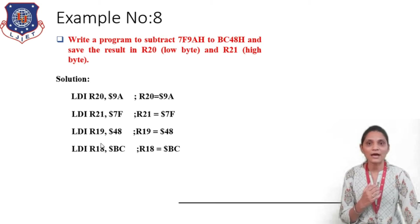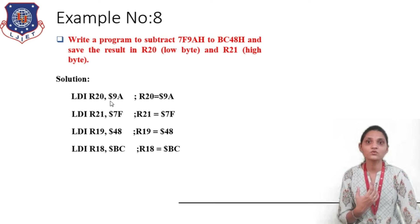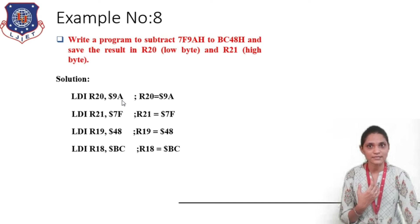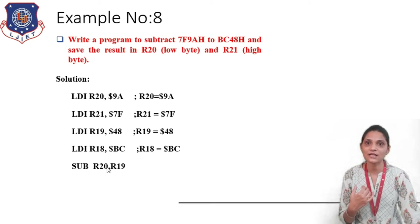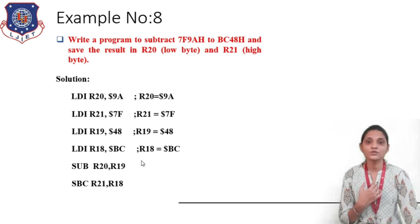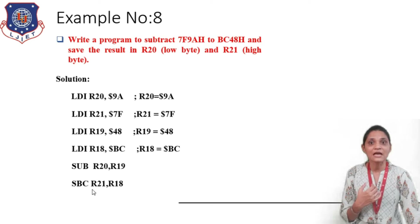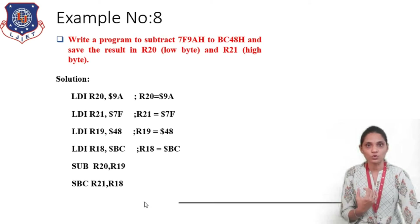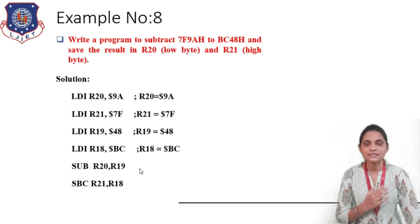Now we perform the subtraction. First we subtract the lower bytes 9A and 48 using SUB R20, R19 — this subtracts 48 from 9A and the result is stored in R20, which is our lower byte. Then for the upper bytes, we must consider any borrow generated from the first subtraction, so we use SBC R21, R18 — this subtracts 7F and BC with the previous borrow. If any borrow was generated it is also subtracted. This is the 16-bit subtraction operation.